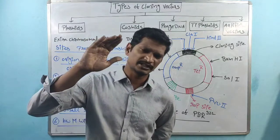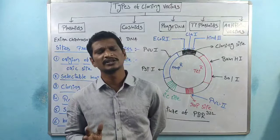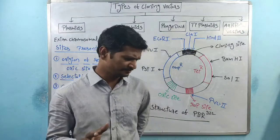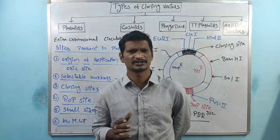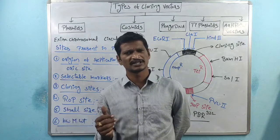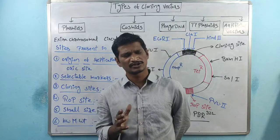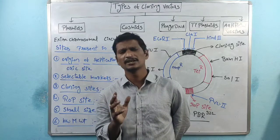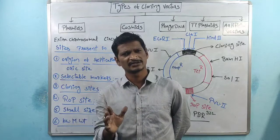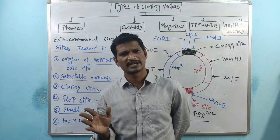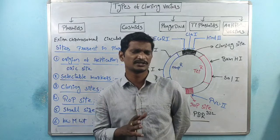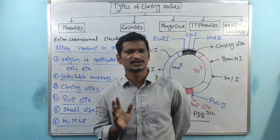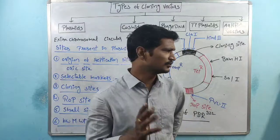Eukaryotic plasmids are expressed in eukaryotic cells because promoter sequences are very specific to interact with enzymes. RNA polymerase enzymes recognize the promoter sequences — that is the reason why prokaryotic genes are expressed in prokaryotic cells and eukaryotic genes in eukaryotic cells. So prokaryotic cloning vectors are expressed in prokaryotic cells, and eukaryotic cloning vectors in eukaryotic cells.